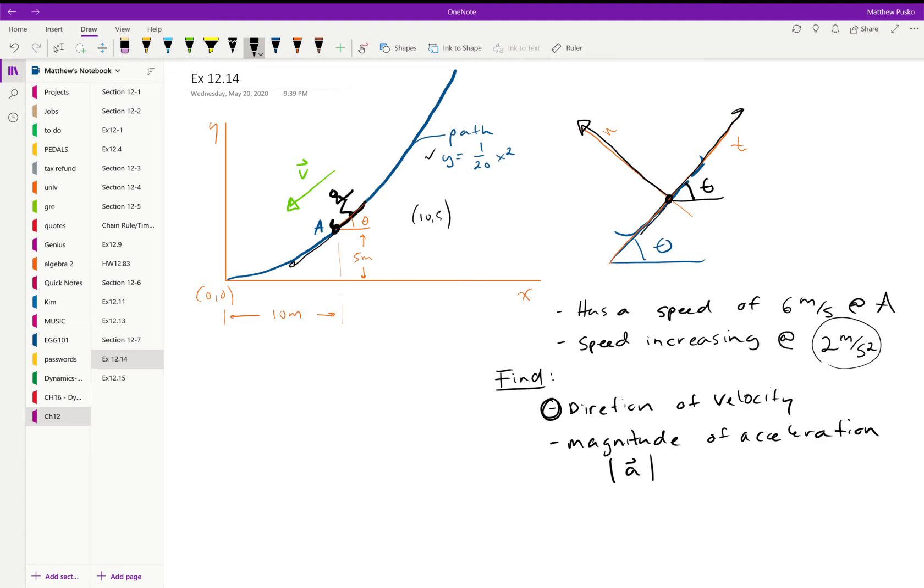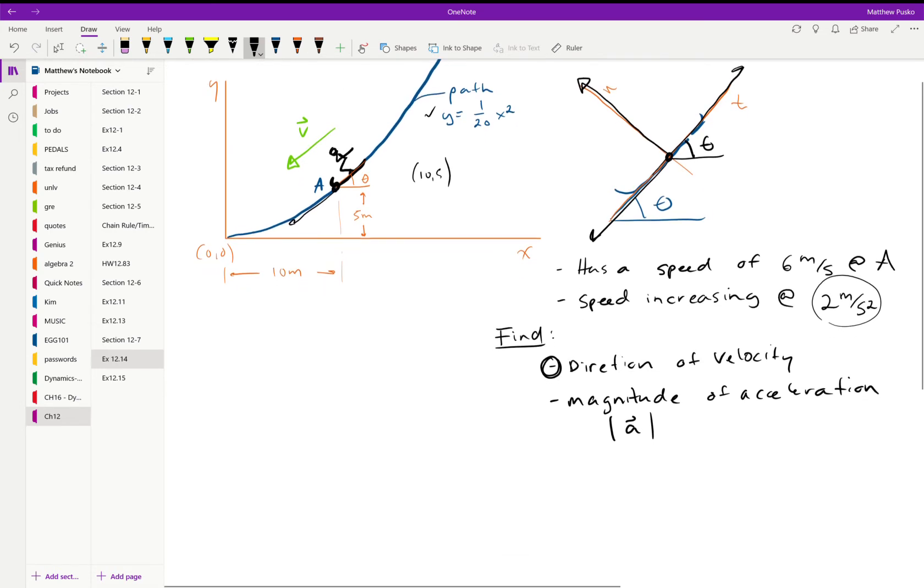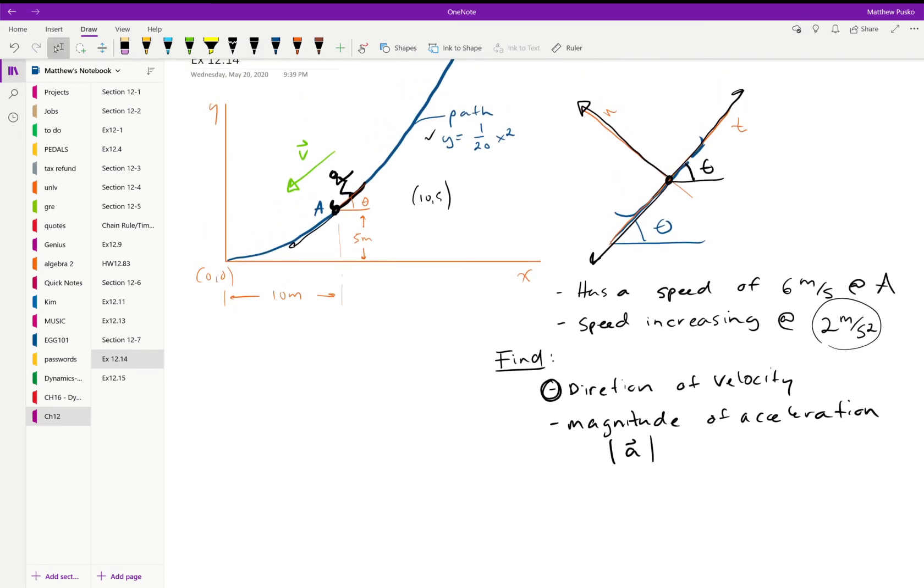Let's find the direction of the velocity. It's not necessarily as intuitive as you'd think, but you've done it a million times in calculus before. If they're asking for the direction, we need that angle. If we have y equals 1/20th x squared, doesn't the derivative literally give us the slope? So let's take dy/dx.